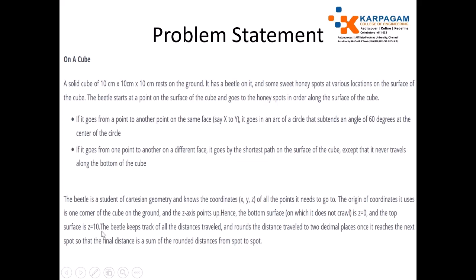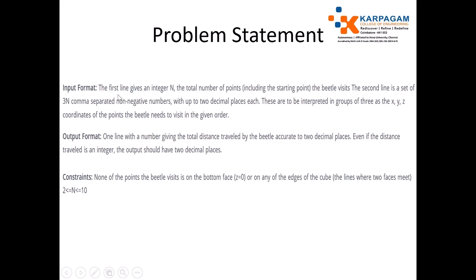The top surface is Z equal to 10. The beetle keeps track of all the distance traveled and rounds the distance traveled to two decimal places once it reaches the next spot, so that the final distance is the sum of the rounded distances from spot to spot. The input format: the first line gives an integer N, the total number of points including the starting point the beetle visits.